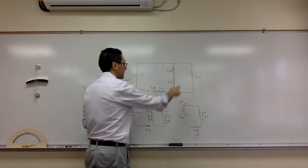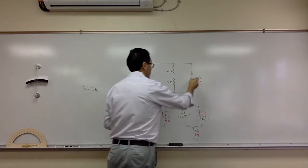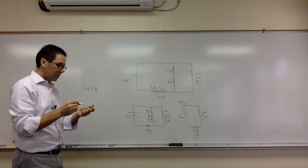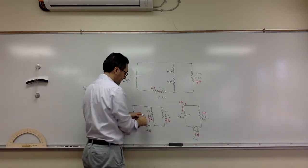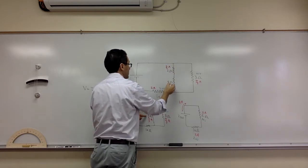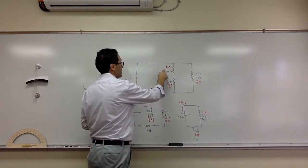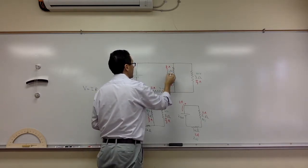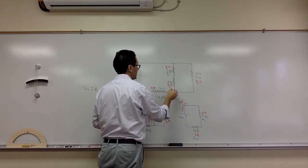So the six-ohm branch is two-thirds of an amp, and the three-ohm branch is four-thirds of an amp. Now the two and four ohm resistors are in series, so the current remains constant — the current through them is the same as through the six-ohm branch: two-thirds of an amp. For voltage, V equals IR: two-thirds times two is four-thirds volts, and four times two-thirds is eight-thirds volts.